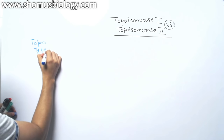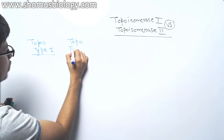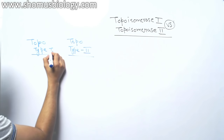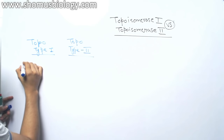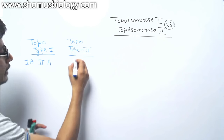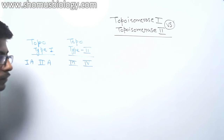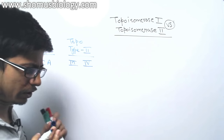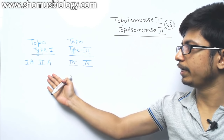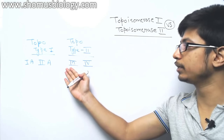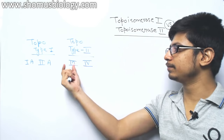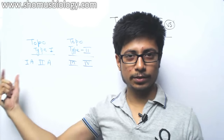Within topoisomerase type 1, we have two different types: topoisomerase 1A and topoisomerase 2A. In type 2, we have topoisomerase 3 and topoisomerase 4. So among type 2, the enzyme names are topo 3 and topo 4, and among type 1, the names are topo 1 and topo 2. That is the common confusion.